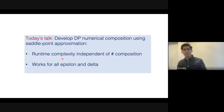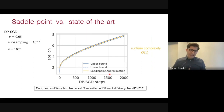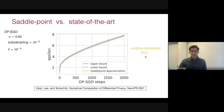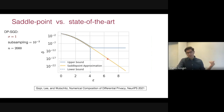The goal of this talk is to introduce a new numerical composition algorithm for DP based on saddlepoint approximation that addresses both issues. In particular, the runtime complexity is independent of the number of compositions, and it works for all values of epsilon and delta. The saddlepoint accountant sits between the lower and upper bounds from Gopi et al., is comparable in accuracy, and has no breaking point in the delta-versus-epsilon curve.